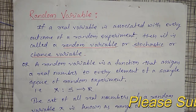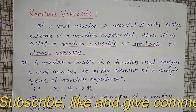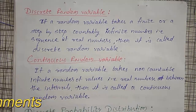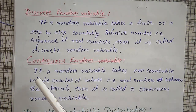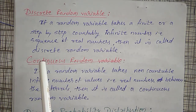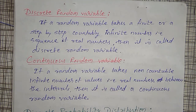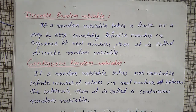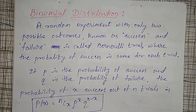There are two types of random variables: discrete random variable and continuous random variable. If a random variable takes a finite or countably infinite number of values, that sequence of real numbers is known as a discrete random variable. For discrete random variables, we study two types of distributions: binomial distribution and Poisson distribution.